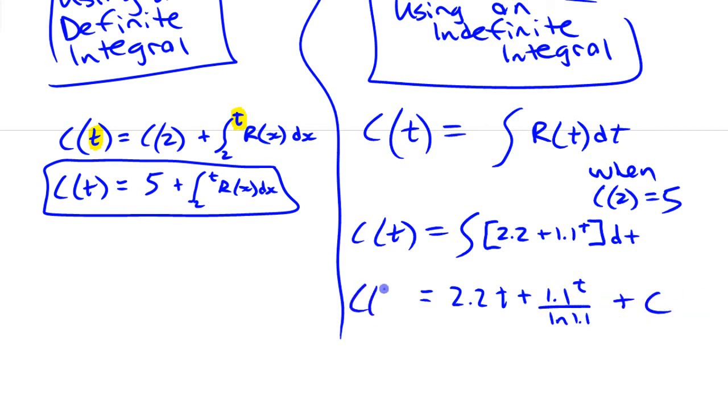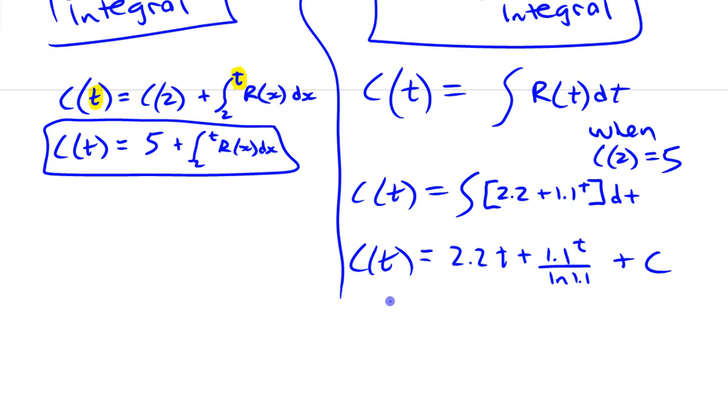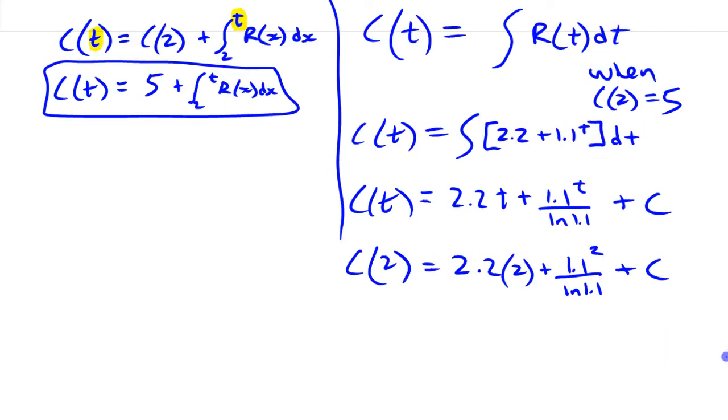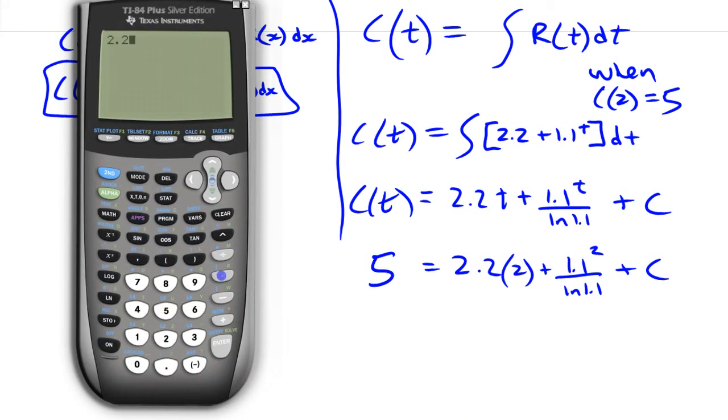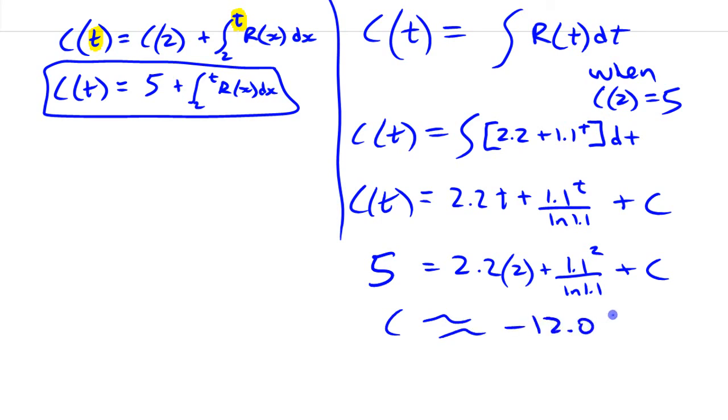We can substitute now this initial condition to find that constant, and we'll have a function that is just as useful. Substituting that value in, c(2) = 2.2(2) plus 1.1^2 over ln(1.1) plus our constant, and c(2) is 5. If we work that out, which I'll do in the calculator, we get about -12.09. That's not going to be a very nice number. We're modeling a real situation pretty loosely anyway, so -12.10 is probably good enough for -12.095.